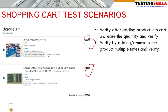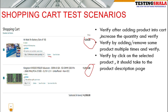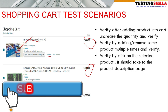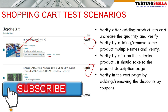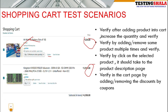You should be able to remove items from the shopping cart by clicking the delete function to remove products. If you click on a product description or image, it should take you to the product description page.